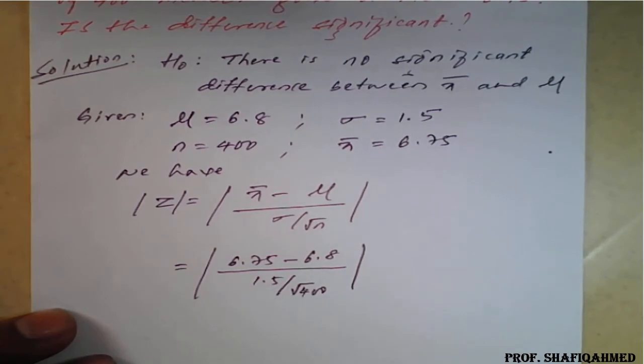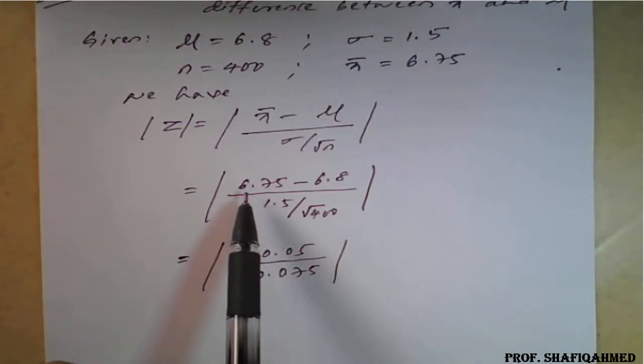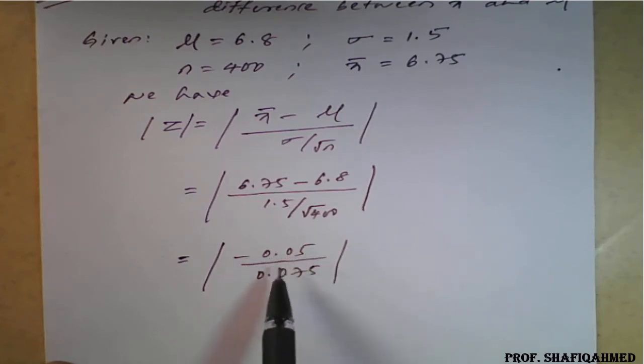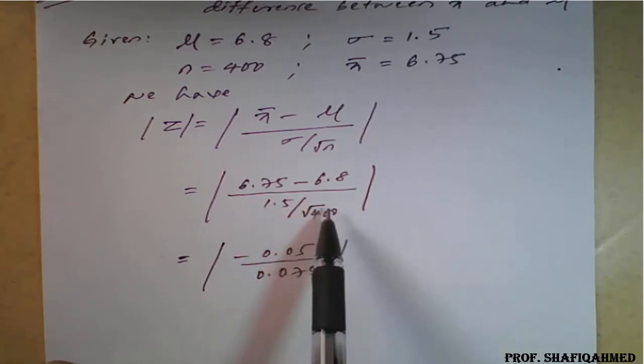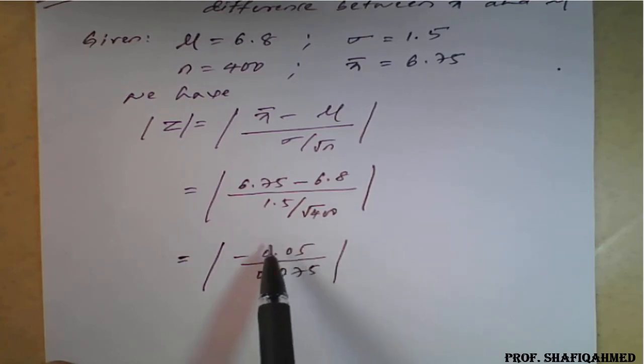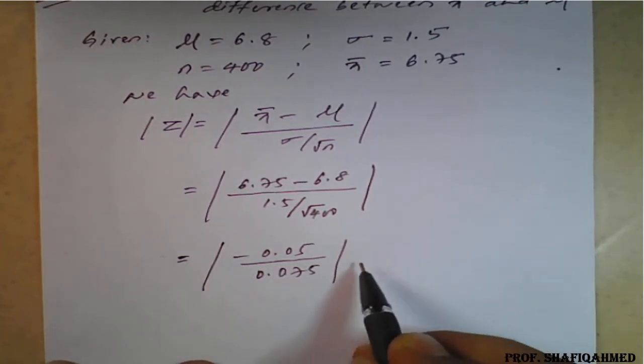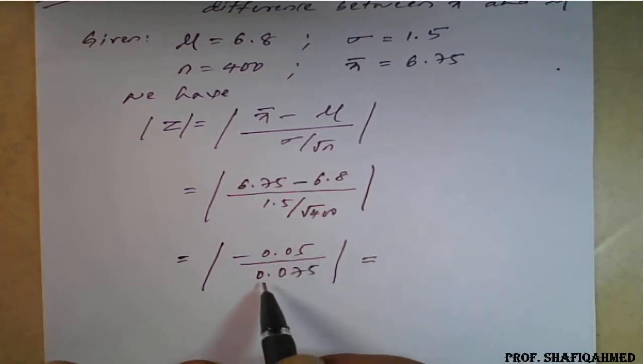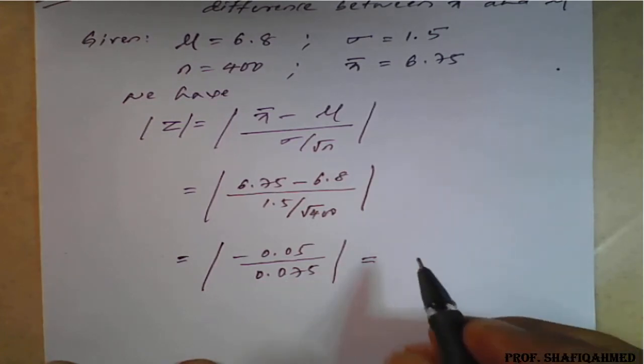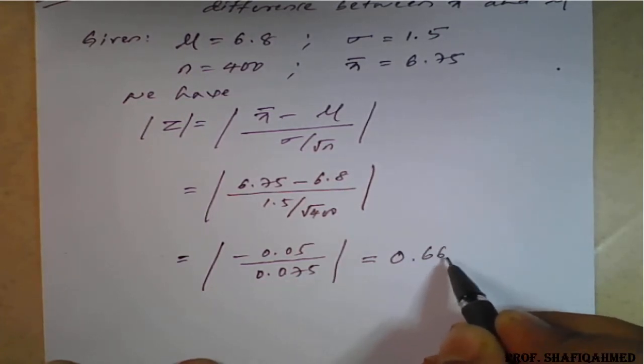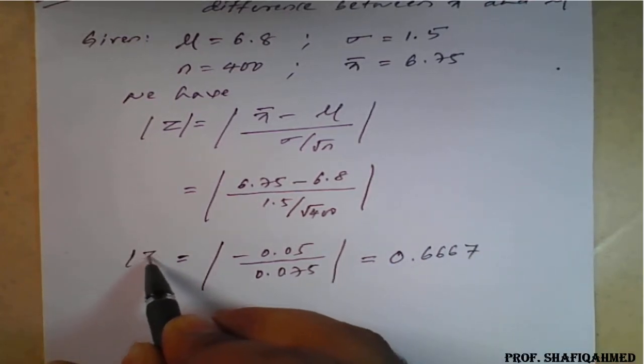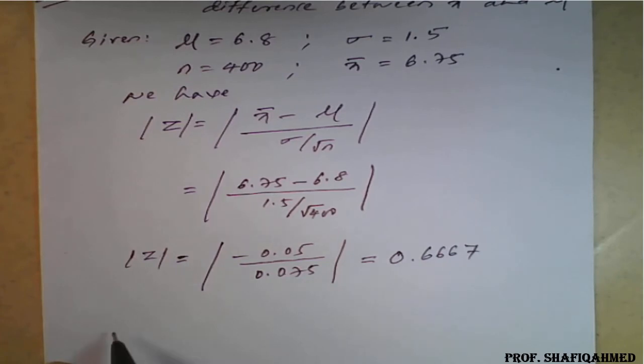Simplify this with the calculator. On simplification, 6.75 minus 6.8 will get minus 0.05 and 1.5 divided by square root of 400 you will get 0.075. This division will get, because of this negative sign, this mod can be removed as absolute value. 0.05 divided by 0.075, we will get the answer is 0.6667. Therefore, mod z equals 0.6667.